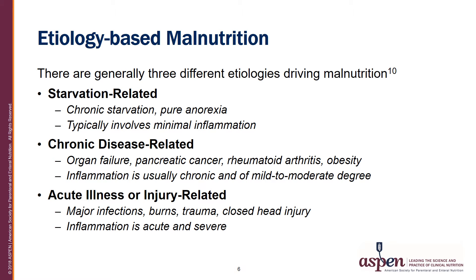A major change in the way malnutrition is evaluated is looking at the etiology or cause of malnutrition. There are three different etiologies recognized. Starvation-related malnutrition is a chronic state of malnutrition, generally a pure anorexia, or the starvation seen when a person has limited access to food because of their environment or social situation. This type of malnutrition typically involves minimal inflammation.